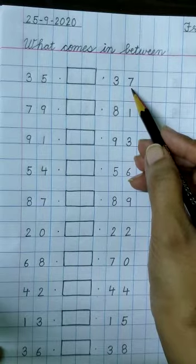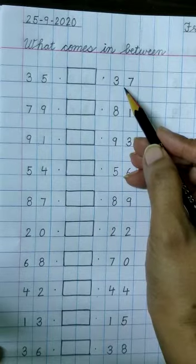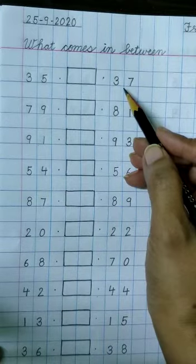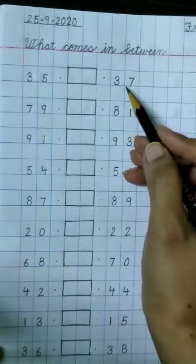Now what comes in between 35 and 37? 35, 36, 37. 36 comes in between 35 and 37.